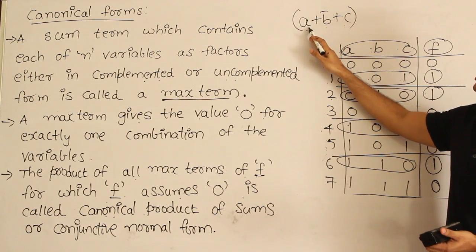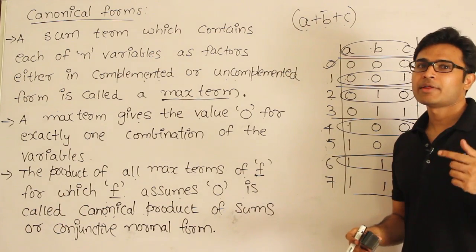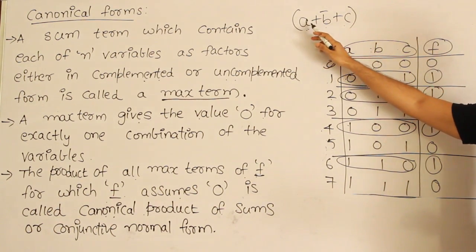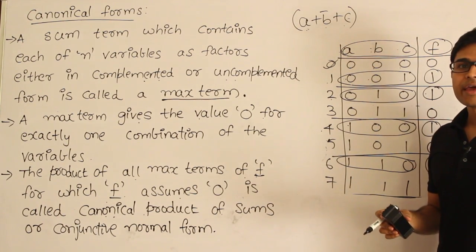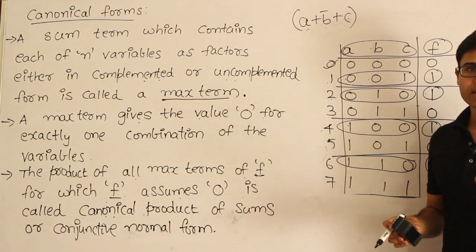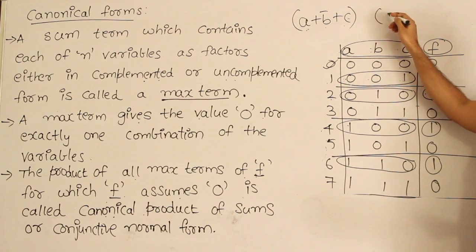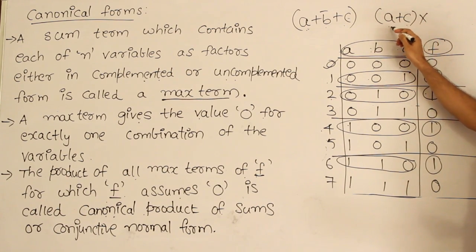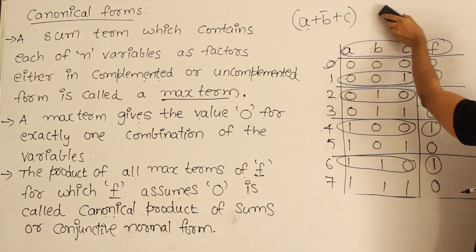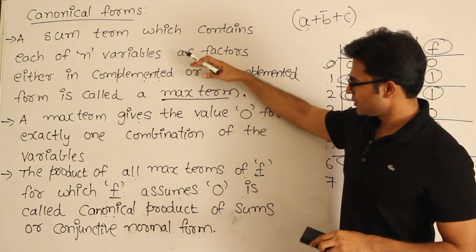The reason is it contains all the variables in either complemented or uncomplemented form. Now, can I have the same variable two times, in complemented and uncomplemented form? If I write a plus a prime, then a plus a prime becomes 1, and 1 plus everything becomes 1. Therefore we cannot write it. Every variable is going to occur exactly once — at least once, at most once, which means exactly once. Either in min term or max term, every variable will occur only once. A term like a plus c is not a max term — it is a sum term, but not a max term. Max term means all variables should be present.